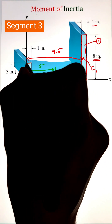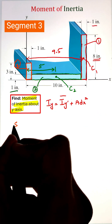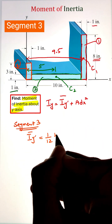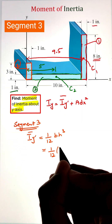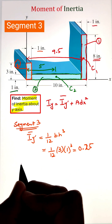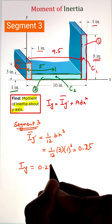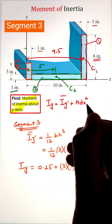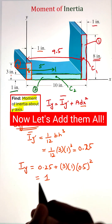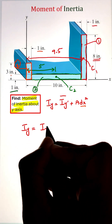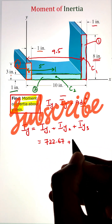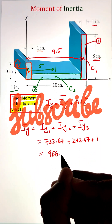Finally, we have segment three having the dimensions of three inches by one inch. Calculating the moment of inertia of this rectangle about the centroidal axis gives us a value of 0.25. The distance between the centroid of this rectangle to the y-axis is 0.5 inches. Taking the square of 0.5, multiplying with the area, and adding that with our moment of inertia about the centroidal axis gives us its value about the y-axis. Once we have all the individual moments of inertia for the three segments, we add them together to get the total value of 966.34 inch raised to the power four.